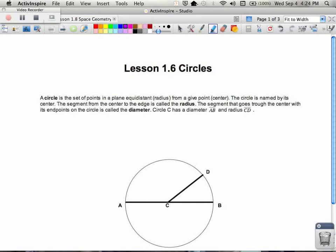In lesson 1.6 we're going to be talking about circles. A circle is the set of points in a plane, which means on a flat sheet of paper, that are equidistant from a given point.